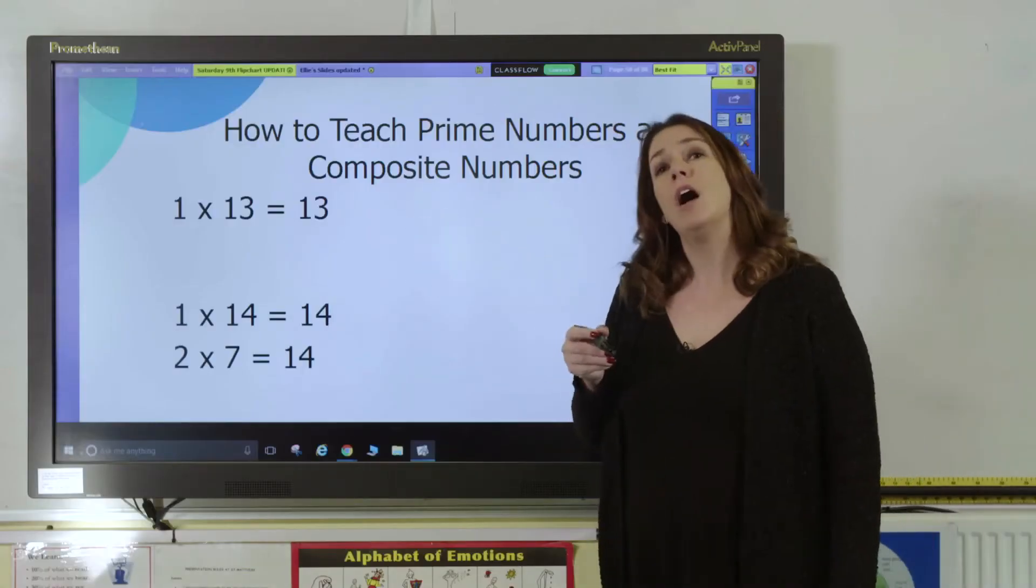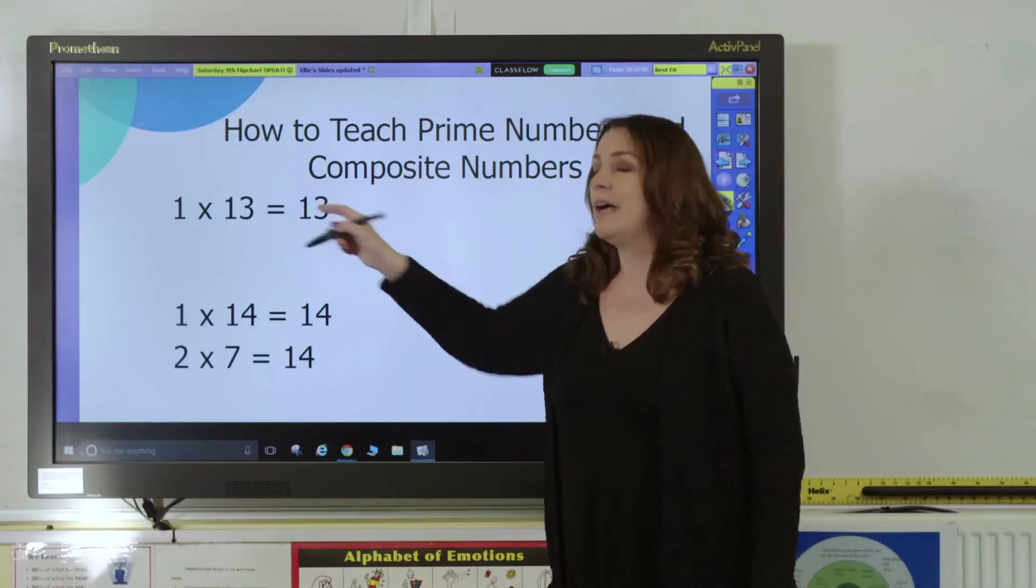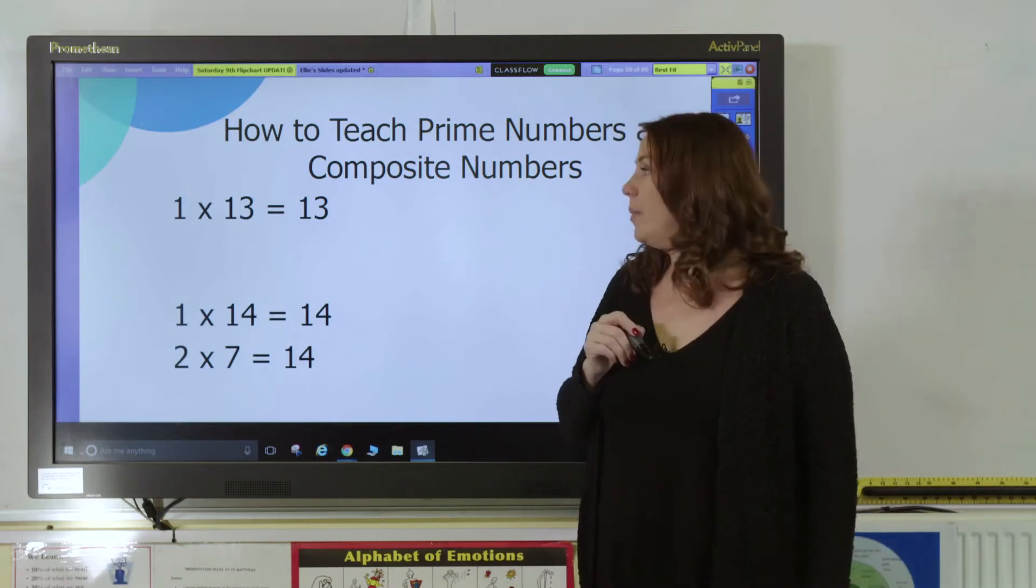All whole numbers have at least two factors: 1 and themselves in their times tables. Numbers that only have 1 and themselves in the times tables are called prime numbers. For example, the number 13 only has the factors 1 and 13 in its times table, so it is a prime number.